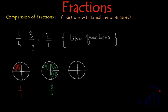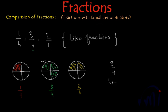The third fraction is 2 by 4. To represent 2 by 4, I have to shade the number of portions written in the numerator, which is 2. So I have shaded 2 portions out of 4, and this represents 2 by 4. Now, which picture has the maximum portion shaded? The picture with the maximum portion shaded is representing the biggest fraction. That is the middle one, representing 3 by 4 — it is the biggest portion.